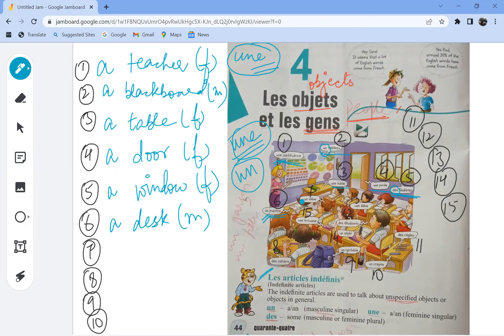Seven, un élève. Un élève is a child, masculine. And une élève, if you see at number 13, une élève is a girl child, feminine.